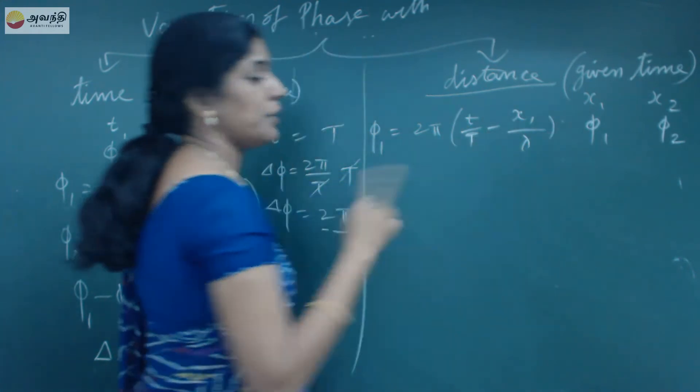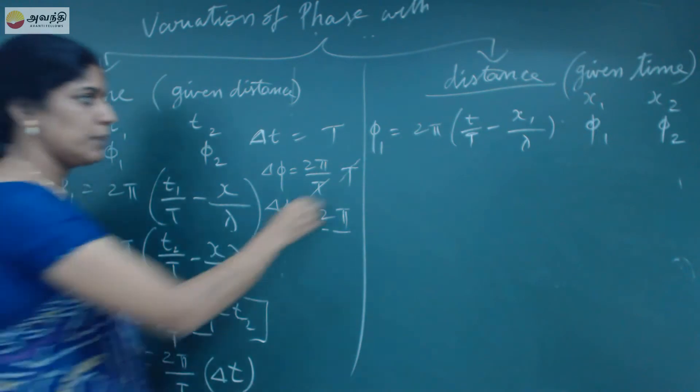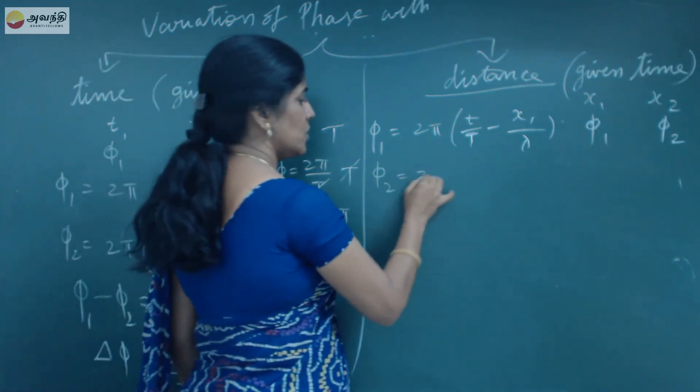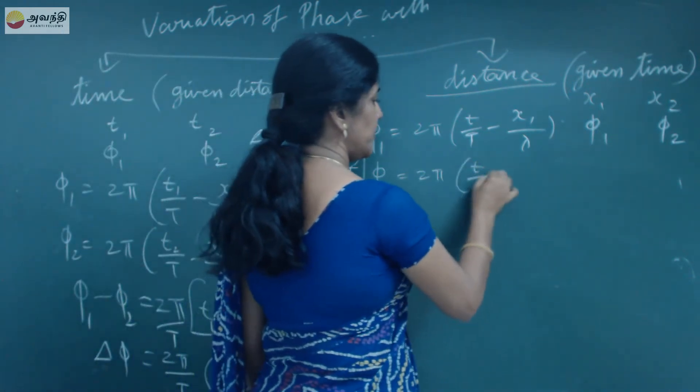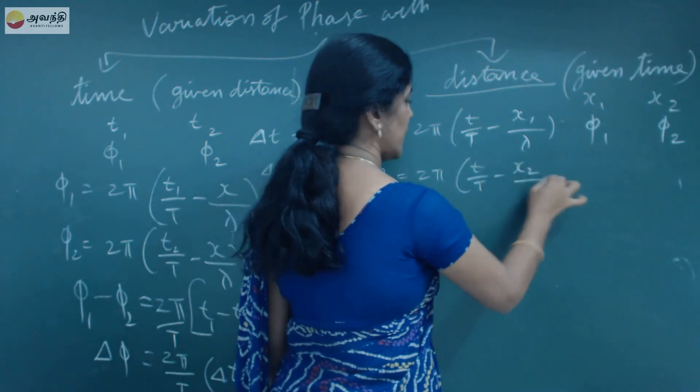Now, the distance vary upon rho time account. Now, φ₂ is equal to 2πt/T minus x₂/λ.